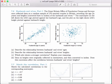Let's switch over to Problem 7.6. Husbands and Wives Part 1. The Great Britain Office of Population Census surveys once collected data on a random sample of 170 male married couples in Britain, recording the age in years and heights converted here to inches of the husbands and wives. The scatter plots on the left show the wife's age plotted against her husband's age, and the plot on the right shows the wife's height plotted against the husband's height. And so they ask us some questions about these plots. So describe the relationship between the husband and the wife's age.